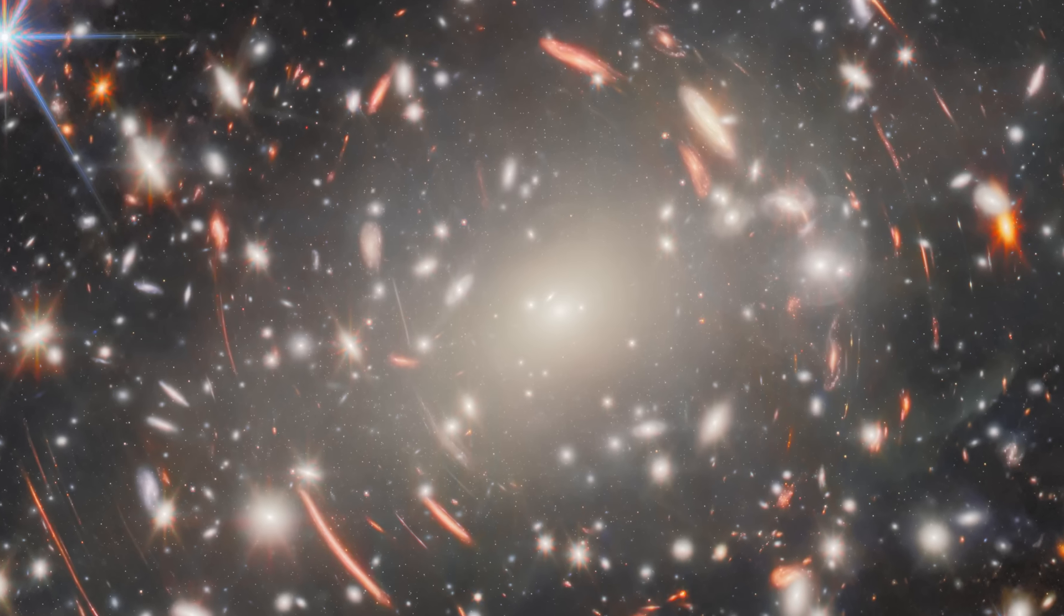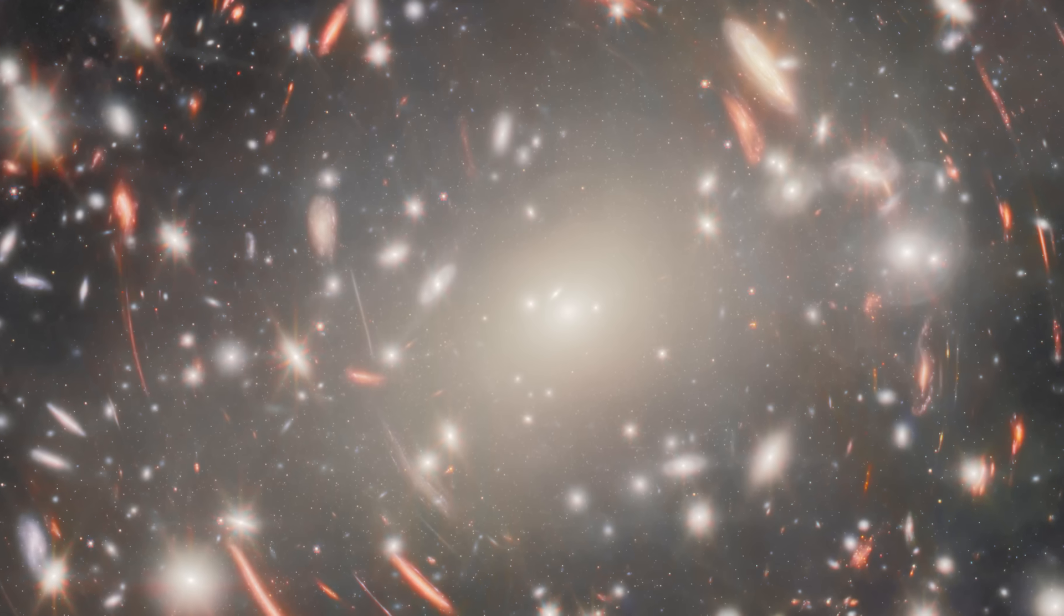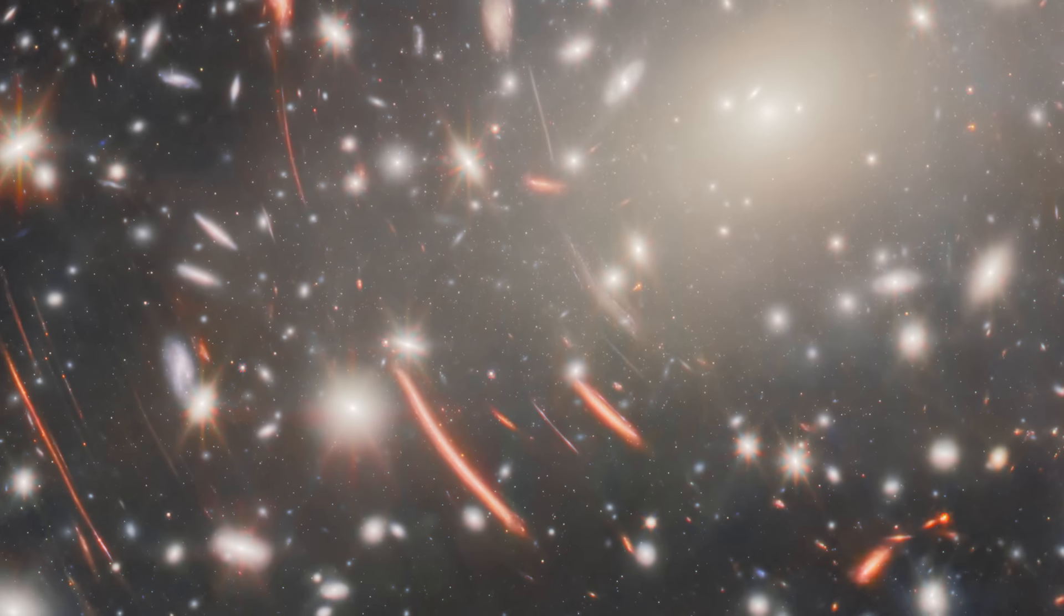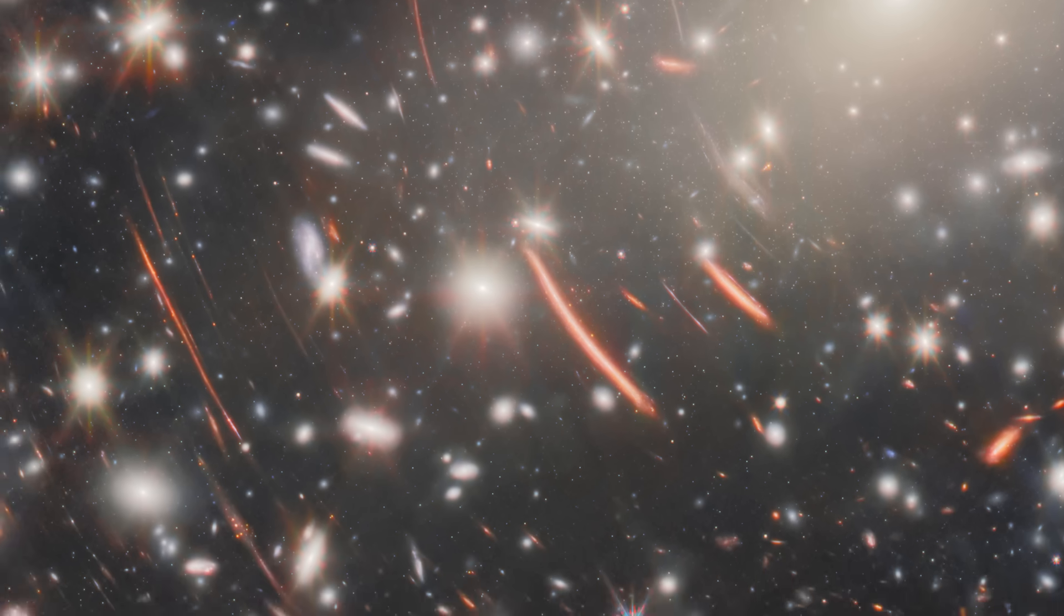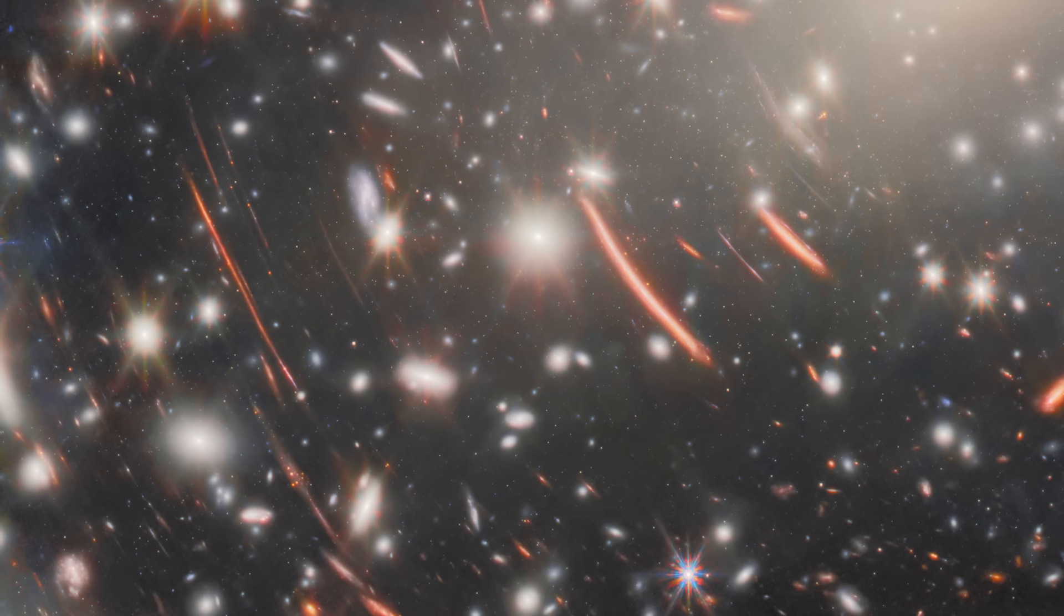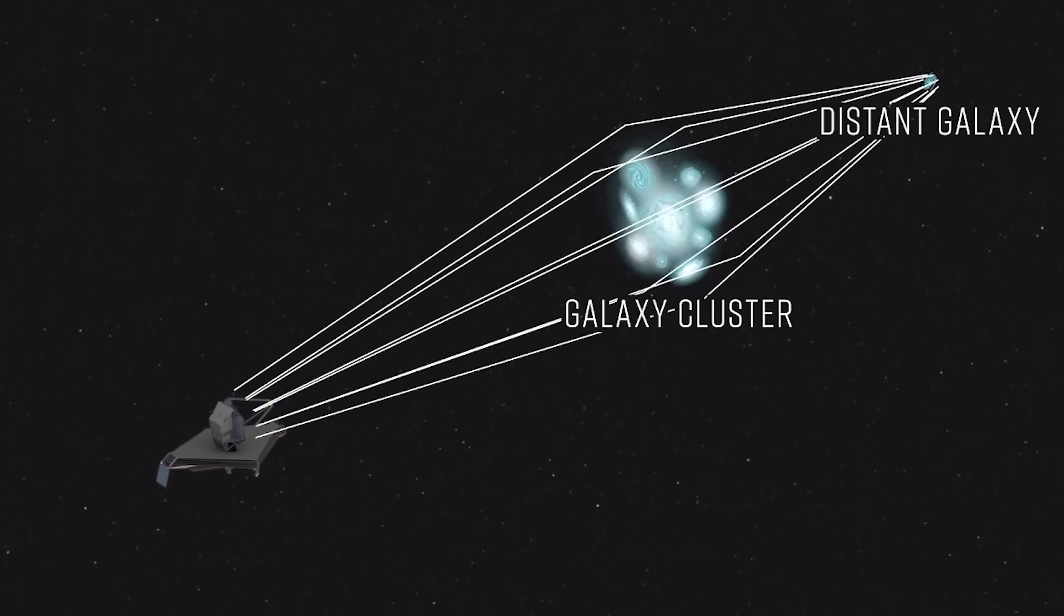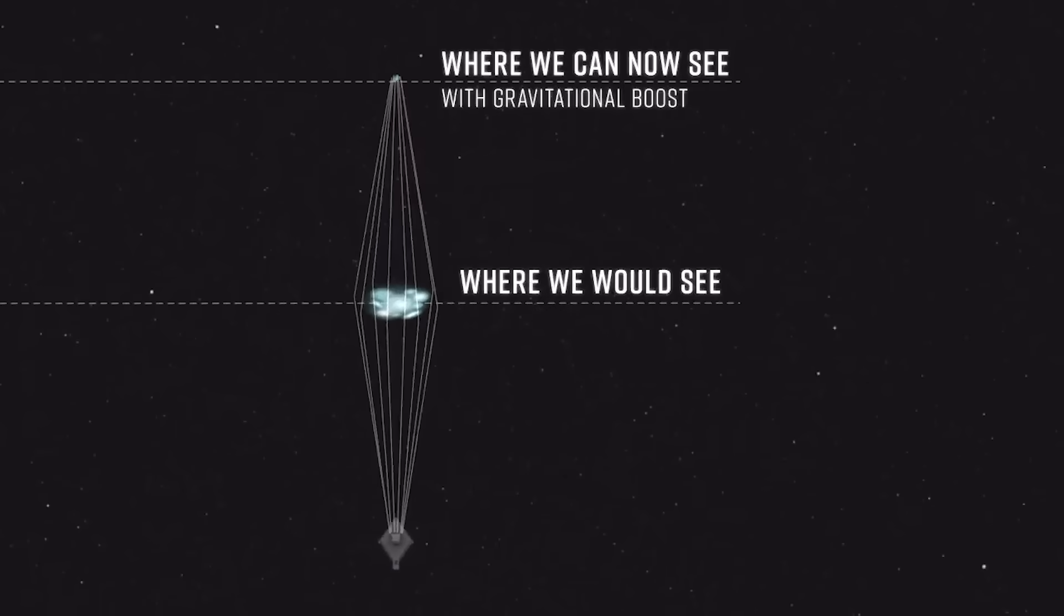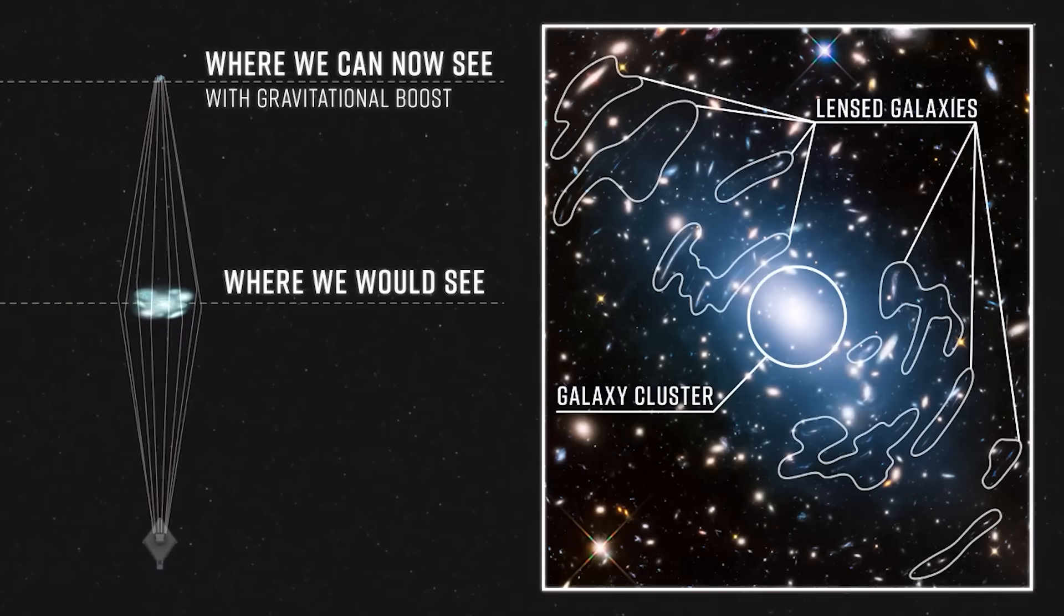At the heart of Abell S1063, you'll see bright, beautiful galaxies. But look more closely, and you'll notice something even more remarkable: faint, stretched arcs of light curving around the cluster. These glowing arcs are not part of the cluster itself. They are actually background galaxies, so distant that their light has traveled billions of years to reach us. As that ancient light passes near Abell S1063, the cluster's immense gravity bent it, just as Einstein predicted with his theory of general relativity. Massive objects like galaxy clusters can warp the fabric of space, causing light to follow curved paths. It's like looking through a giant magnifying glass in space.